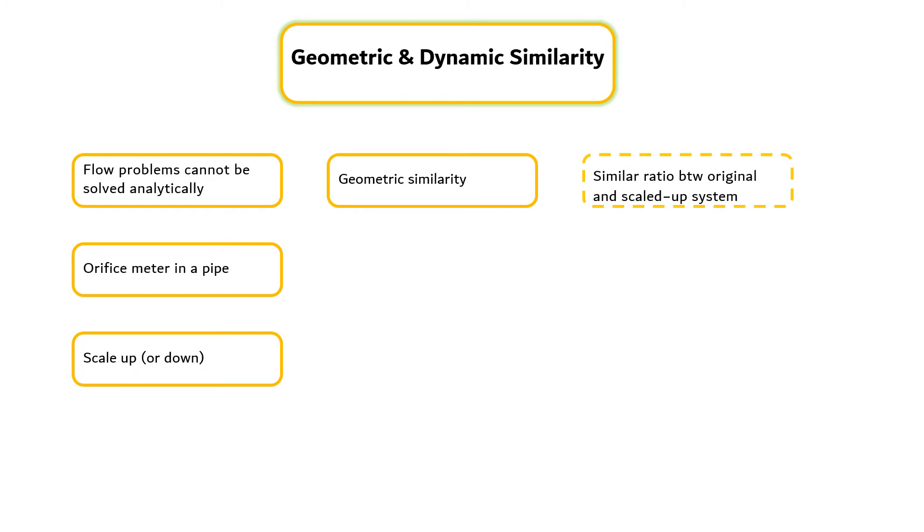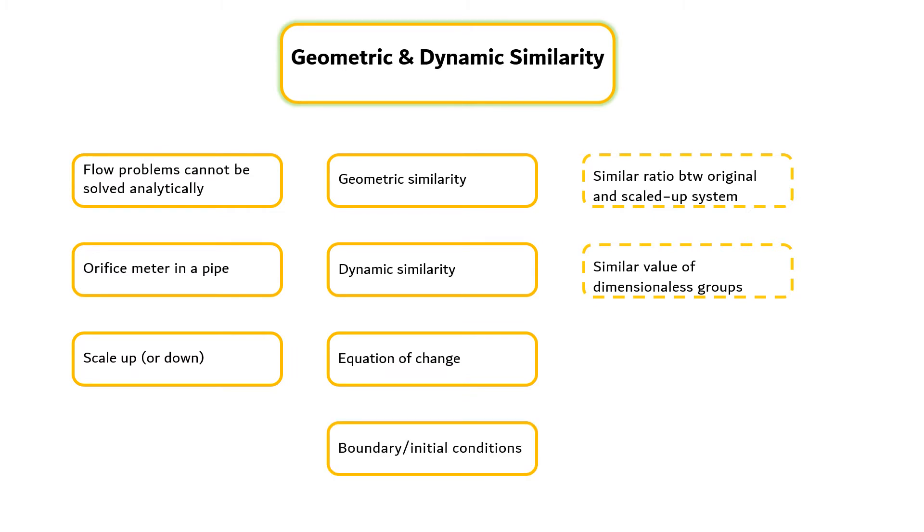In addition, we must have dynamic similarity, i.e., the dimensionless group such as the Reynolds number in the differential equations and the boundary conditions must be the same. The study of dynamic similarity is best understood by writing the equations of change along with the boundary and initial conditions in dimensionless form.